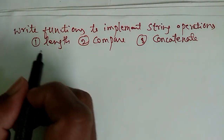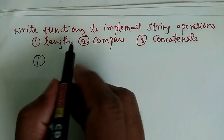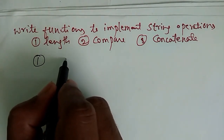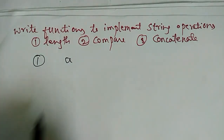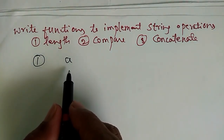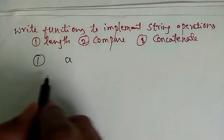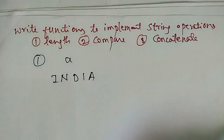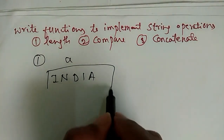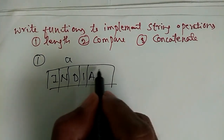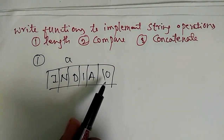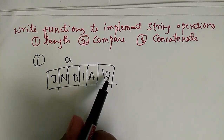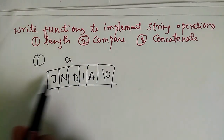Now I will show how to calculate the length of a string. To calculate the length, we need a string — let's consider string A. A string is nothing but a collection of characters. Consider something like 'India'. This is a string. But in C language, each string should end with a backslash 0. If there is no backslash 0, we cannot call it a string.